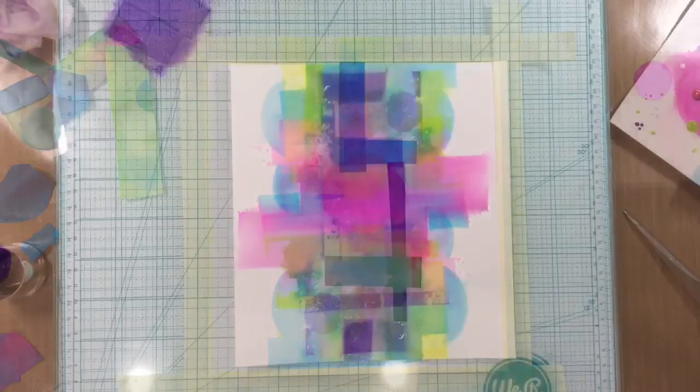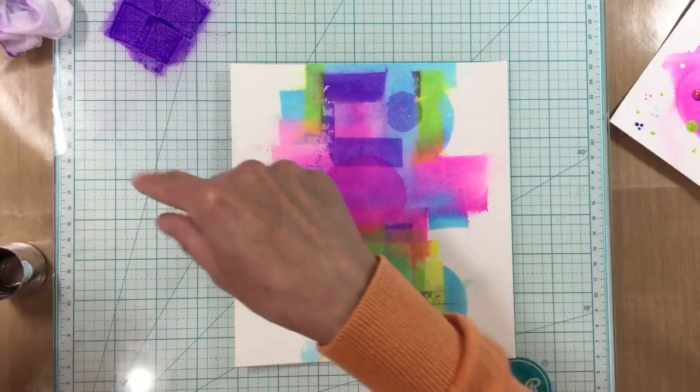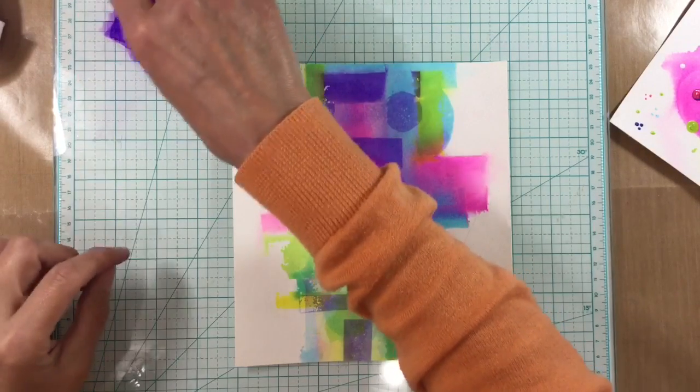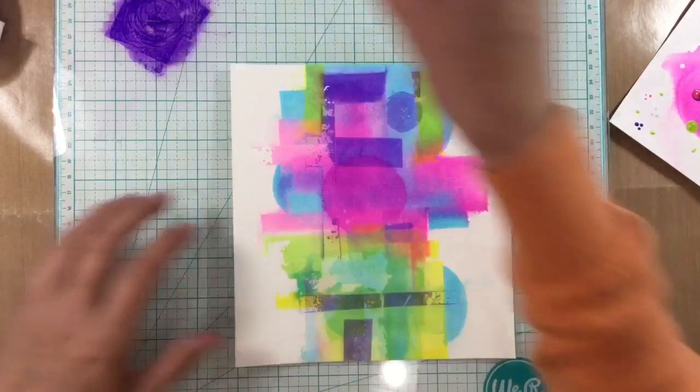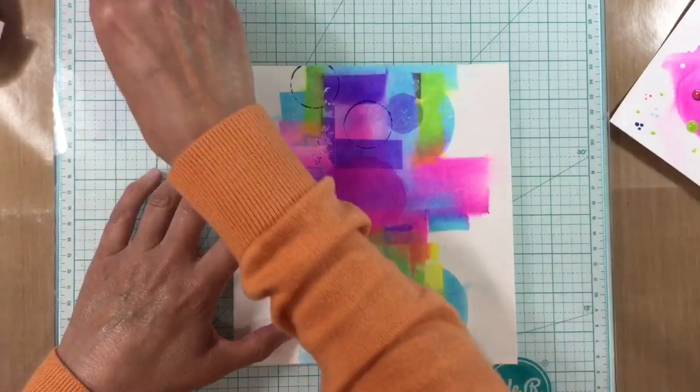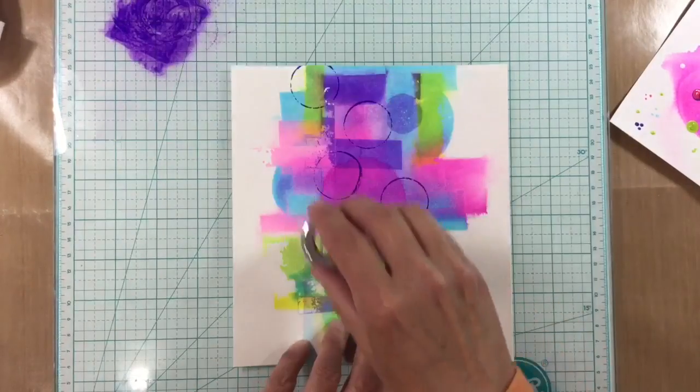and I've put some distress ink in wilted violet on my palette here. I've put quite a lot on because I don't want to add any water but I just want to add some circles to this page and I'm just going to add them all the way down like this